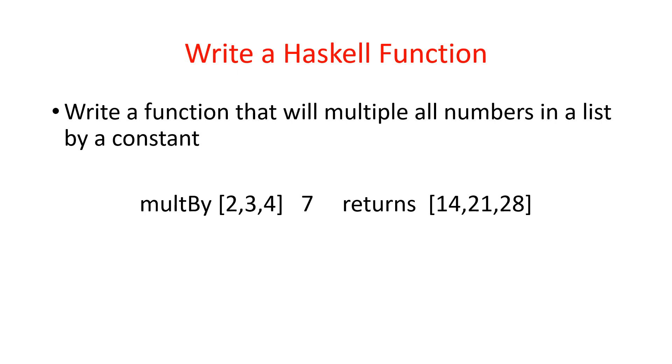Try this example. Write a function that multiplies all the numbers in a list by a given number's second parameter. In this example, we're going to multiply 2 times 7 to get 14, 2 times 3 to get 21, and 4 by 7 to get 28. Pause the video and try this.